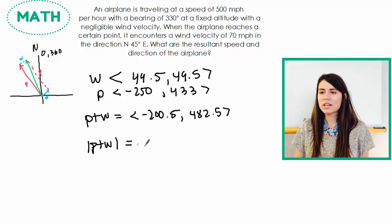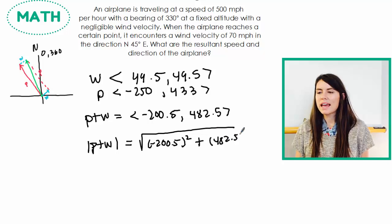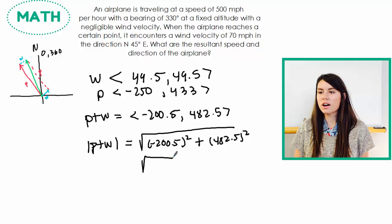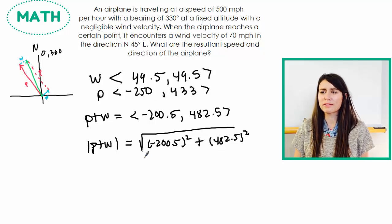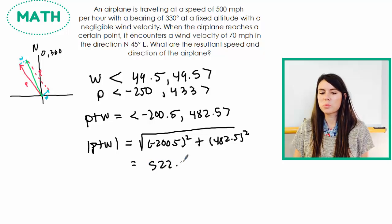So the magnitude is we just take the first number and we square it. And then we take the second number and we square it. And then we square root that amount. So our vector, I'm just going to throw that in the calculator. So once we plug this in the calculator, we get 522.5 miles per hour.